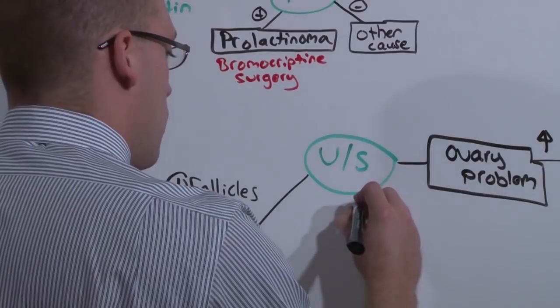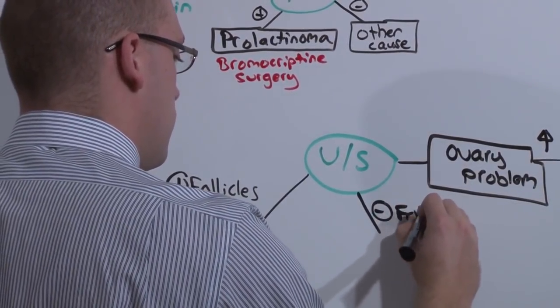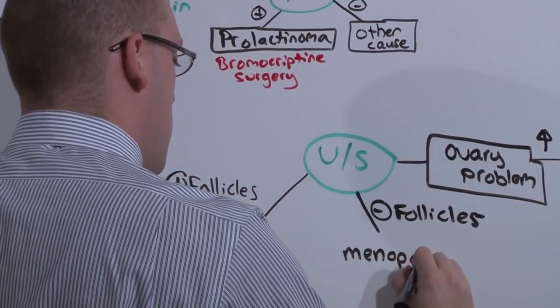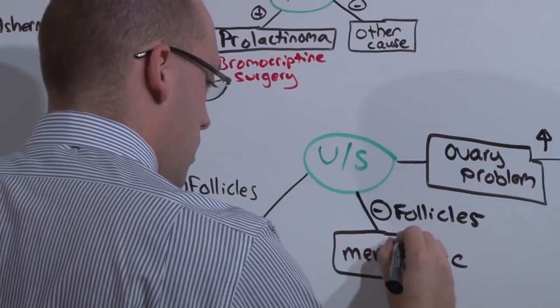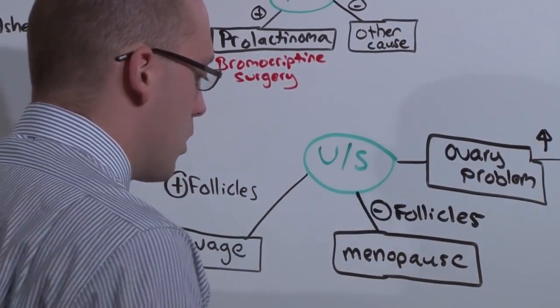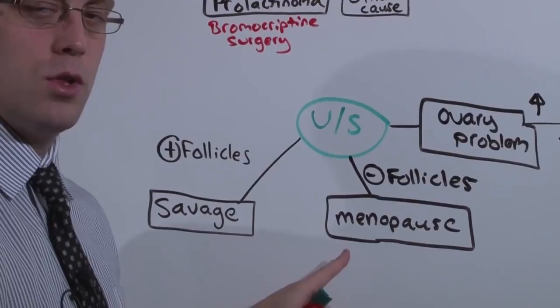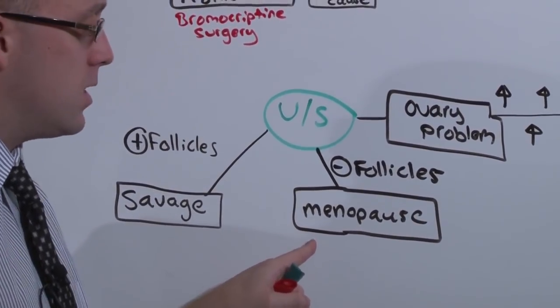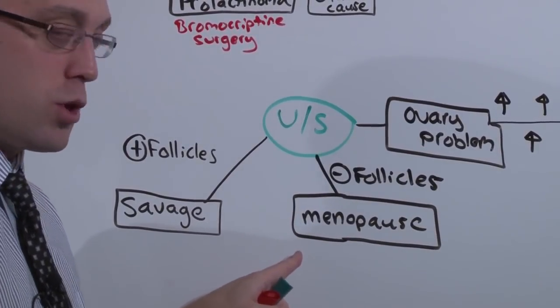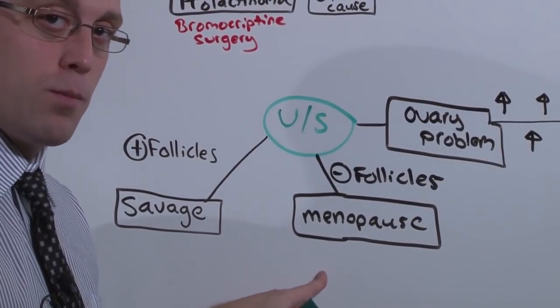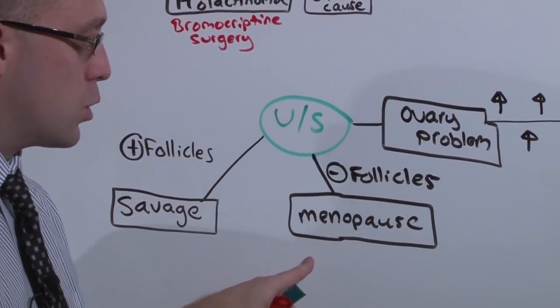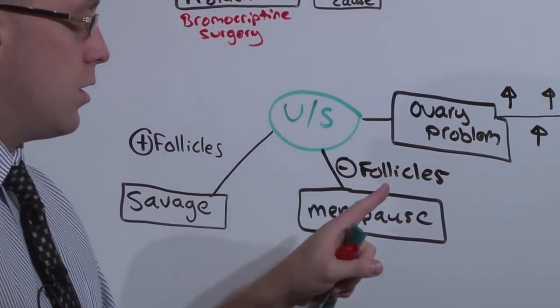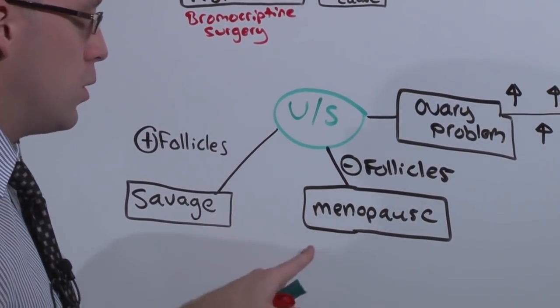On the other hand, if there are no follicles, she is in menopause. And menopause is only pathologic if it occurs in a woman less than 40 years old. Less than 40 years old in menopause, abnormal. And this is usually familial, so her family needs to be counseled. In this condition, you're going to treat her menopausal symptoms. There's no going back, there's no reversing it, and you can see the menopause lecture for more details. Recognize that in menopause and Savage syndrome, the FSH and LH will both be elevated, and the difference is made by the ultrasound.